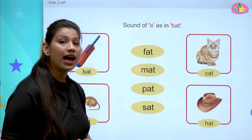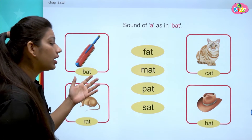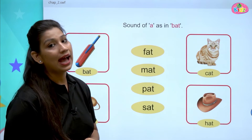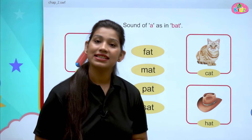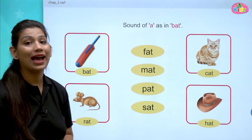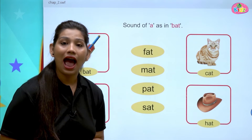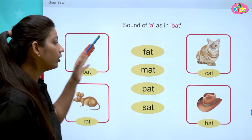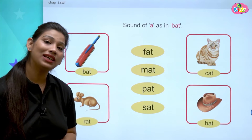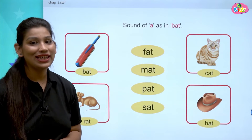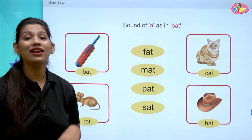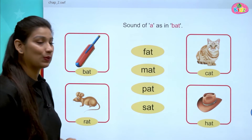F, A, T — Fat. M, A, T — Mat. P, A, T — Pat. S, A, T — Sat. All of the words are with AT sound. In all of the words, A is coming in the middle. All are three letter words — one, two, three.